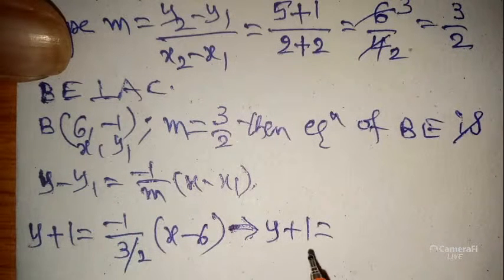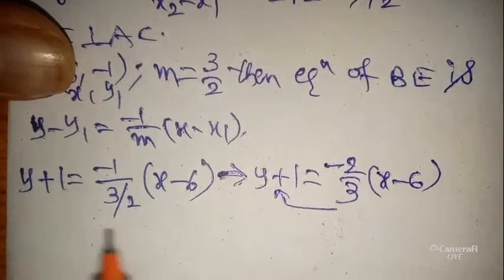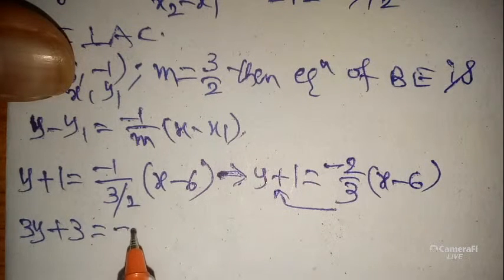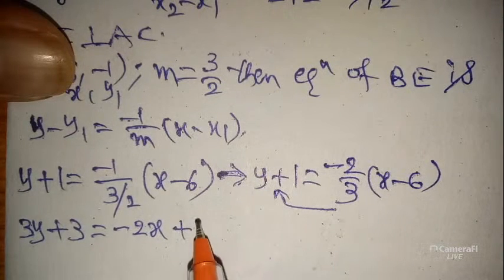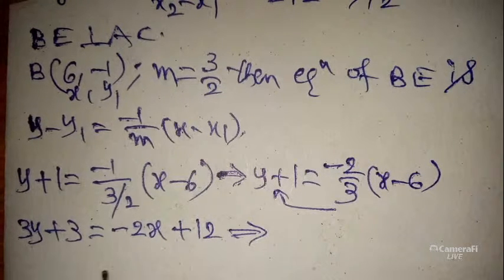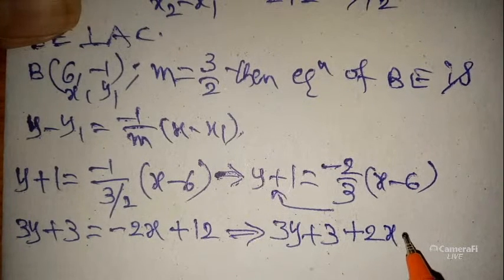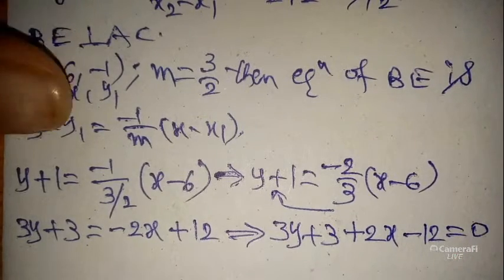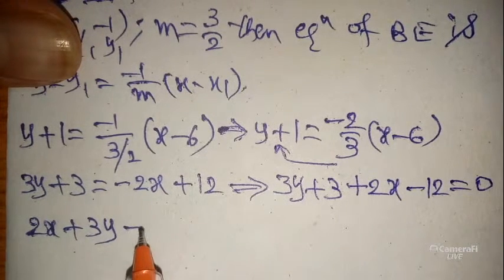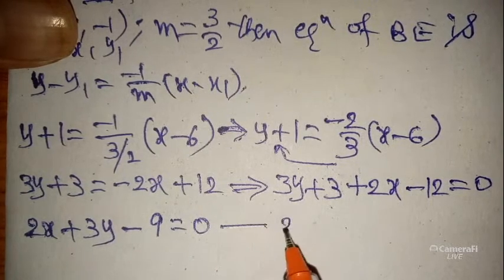Cross multiplying: 3(y + 1) = −2(x − 6), giving 3y + 3 = −2x + 12. Since the x coefficient is negative, right-side values move left: 2x + 3y + 3 − 12 = 0, which gives 2x + 3y − 9 = 0. Let this be Equation 2.